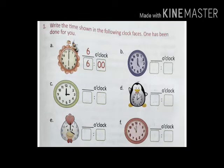Let's solve it. For A, it is 6 o'clock. For B, the small hand is 5 and the big hand is 12, so it is 5 o'clock.